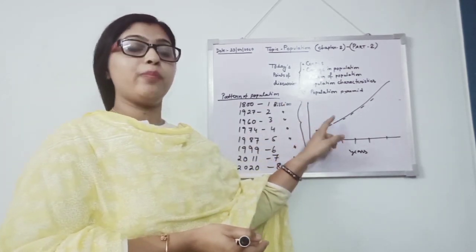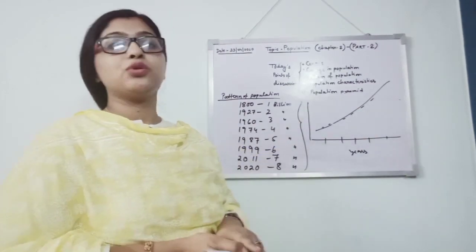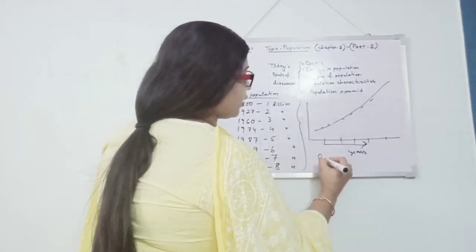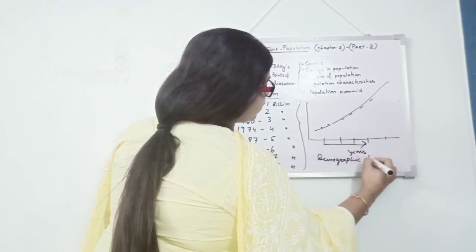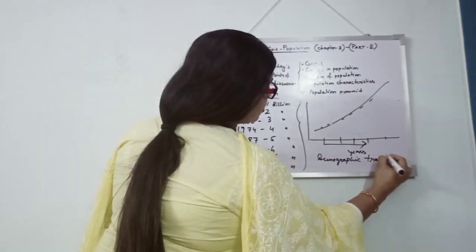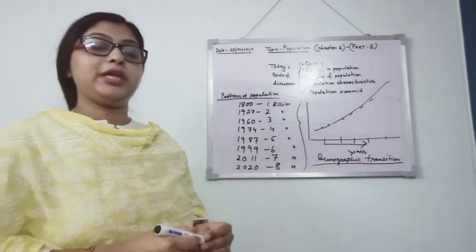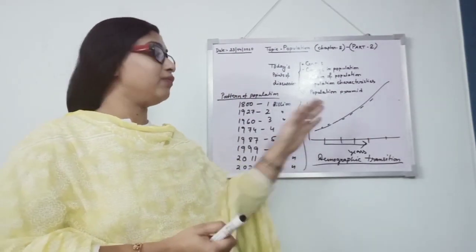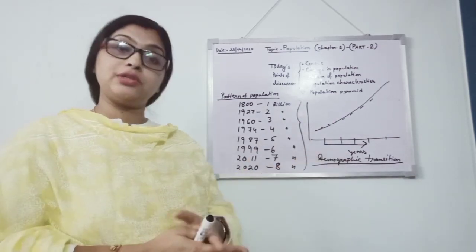This curve is showing the number of population changing in different years. This is known as demographic transition. What is demographic transition? Number of population changing in different years. Through our curve, we are getting to know that is known as demographic transition.